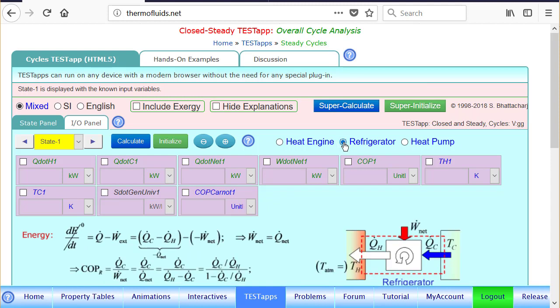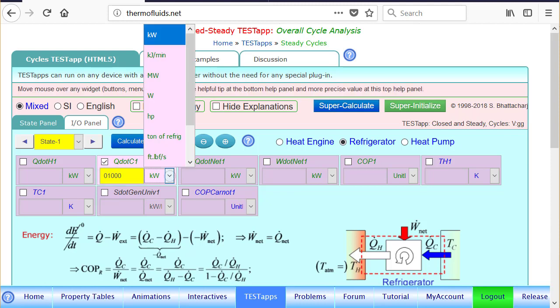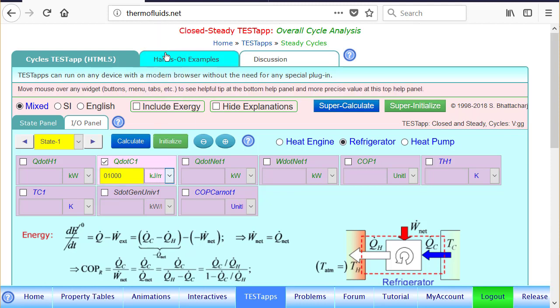And let's enter the information that is known. The Q dot C, the heat that is extracted out of the house, is given to us as 1000 kilojoule per minute. Heat, so let's select the correct unit.